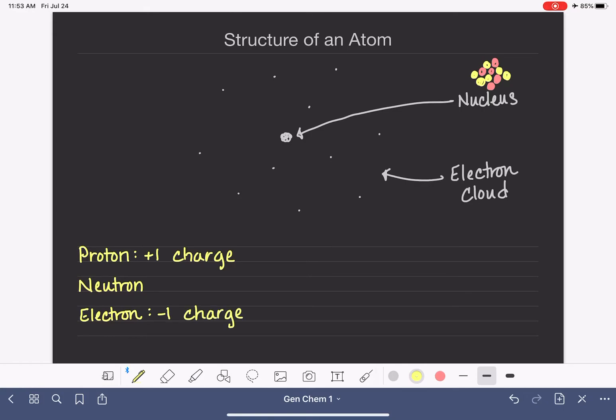And in all atoms, the number of protons is equal to the number of electrons. So these charges balance each other out or cancel each other out. Every positively charged proton is balanced by a negatively charged electron.